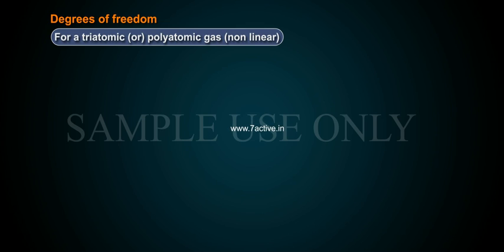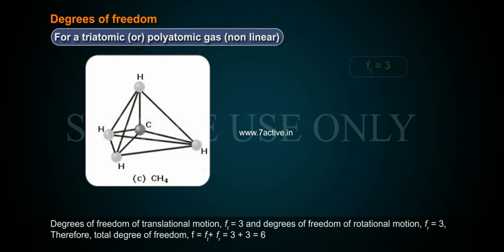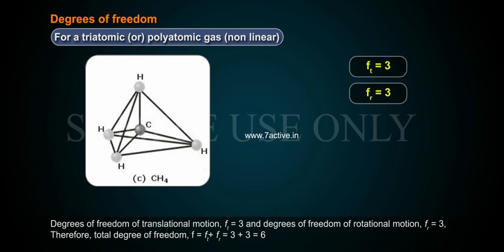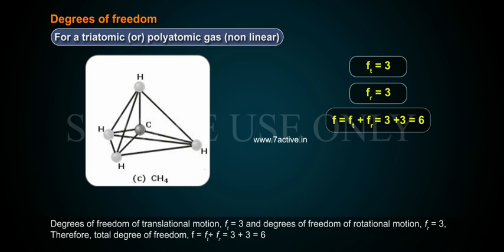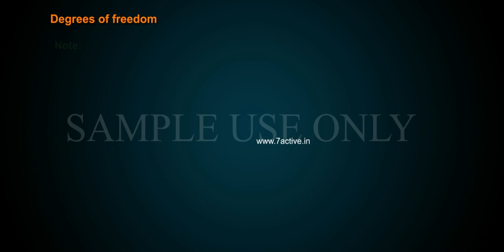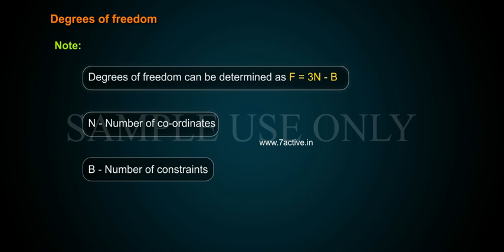Triatomic or polyatomic non-linear gas: Degrees of freedom of translational motion Ft equals 3 and degrees of freedom of rotational motion Fr equals 3. Therefore, total degrees of freedom F equals Ft plus Fr equals 3 plus 3 equals 6. In general, degrees of freedom can be determined as F equals 3n minus b, where n is the number of coordinates required to specify a thermodynamic system and b is the number of constraints.